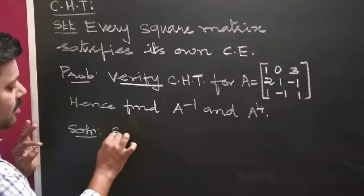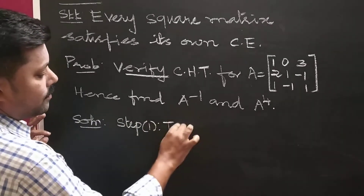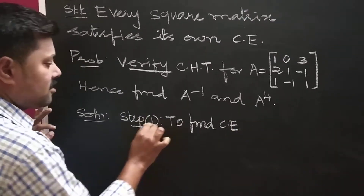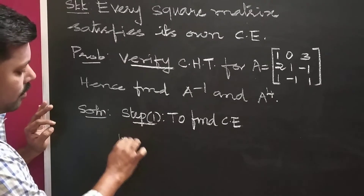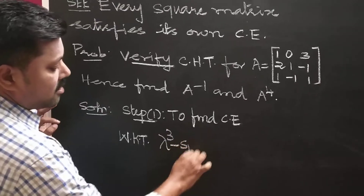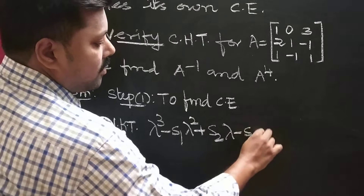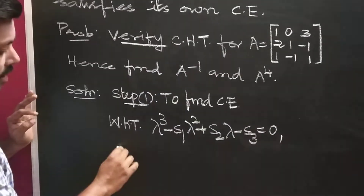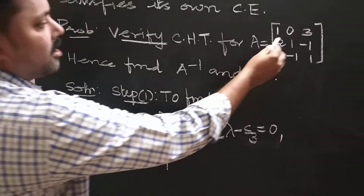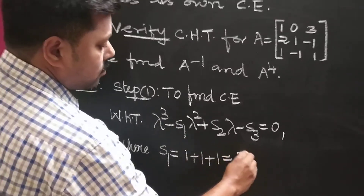Step number 1: to find the characteristic equation. For a 3×3 matrix, the characteristic equation is lambda cubed minus S1 lambda squared plus S2 lambda minus S3 equals zero. Where S1 is the sum of the main diagonal elements. Here the diagonal elements are 1, 1, 1, so S1 equals 1 plus 1 plus 1 equals 3.